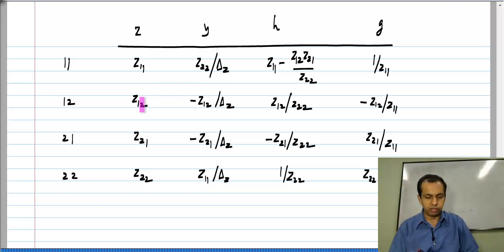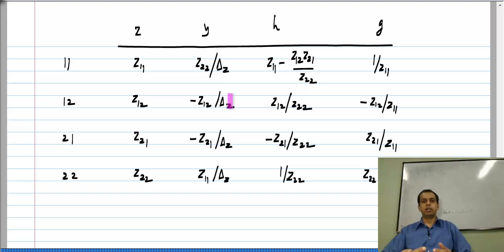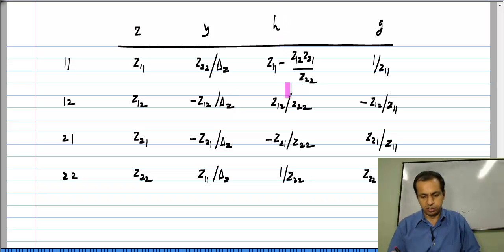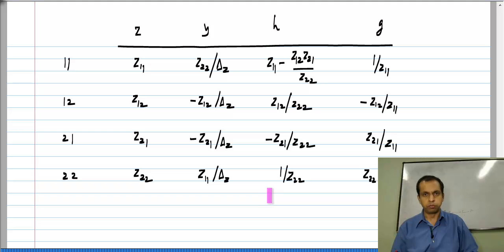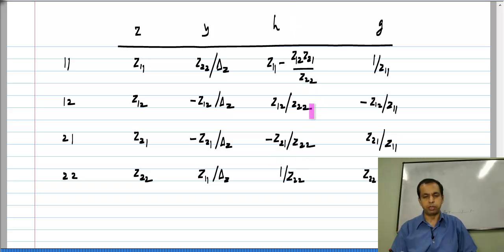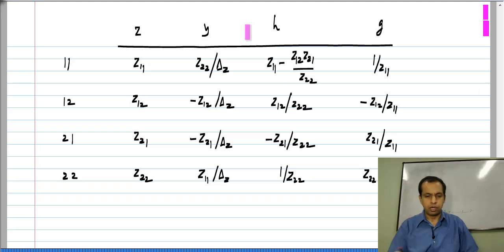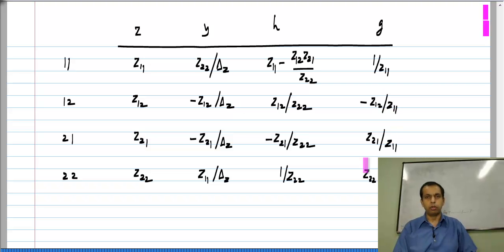You can clearly see that if Z12 equals Z21, then Y12 will also equal Y21. It is not that a circuit is reciprocal in Z parameters but not in Y parameters or other parameters. For H parameters: H12 is Z12 over Z22 and H21 is minus Z21 over Z22, so if Z12 equals Z21 then H12 equals minus H21 — that is the reciprocity condition in H parameters. For G parameters: G12 is minus Z12 over Z11 and G21 is Z21 over Z11, so if Z12 equals Z21 then G12 equals minus G21.